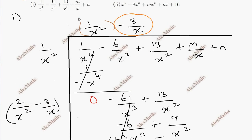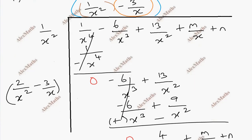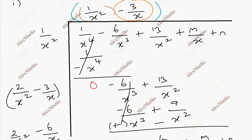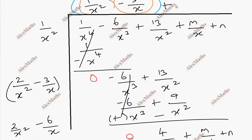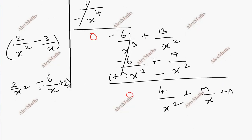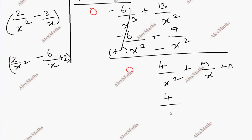This is plus m/x plus n, copy. Now this is the entire expression: 2 by x square. This is 4 by x square — this is the first term — so this is plus 2, the entire term is plus 2.